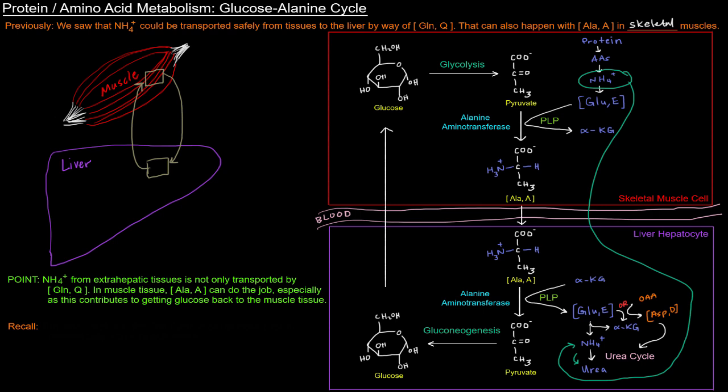Now this schematic might look kind of familiar, the muscle and liver with a cycle. If you recall, there is another cycle, the Cori cycle, that is a similar thing.